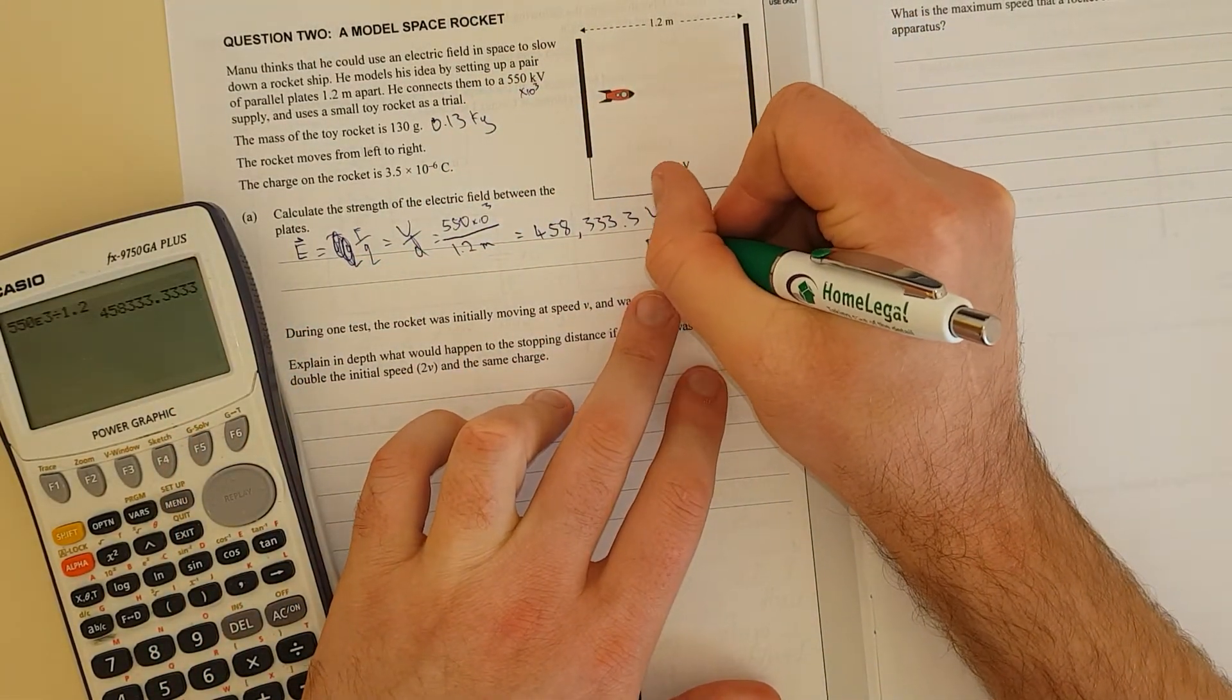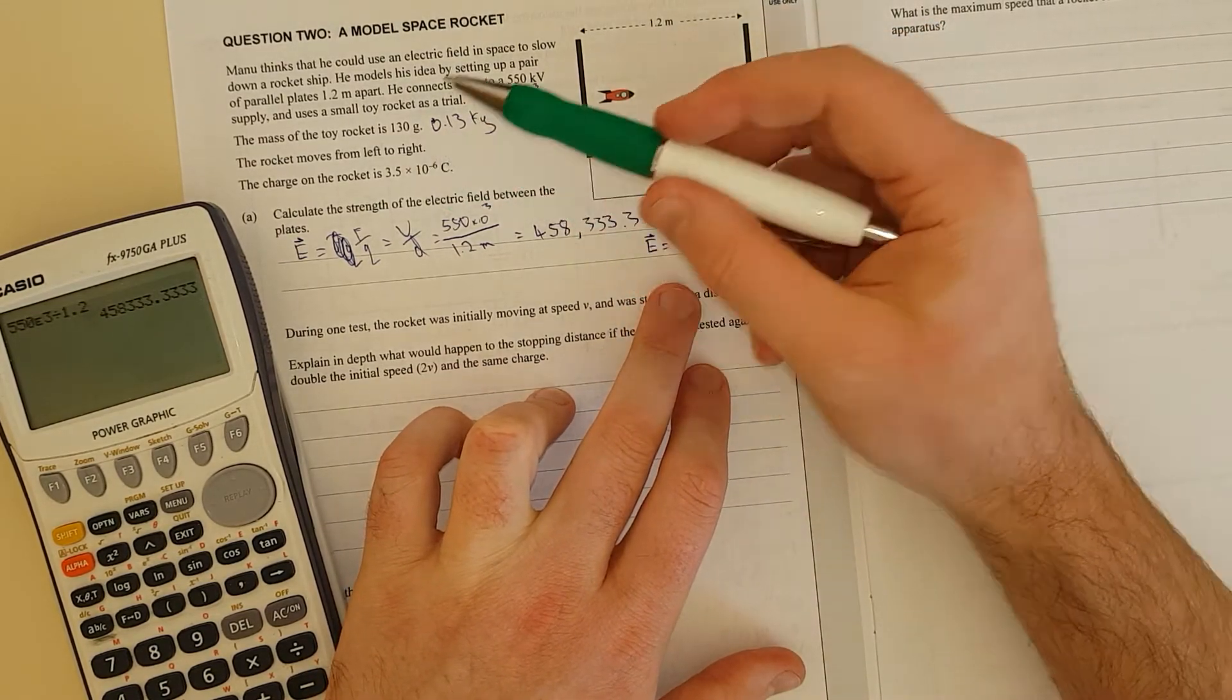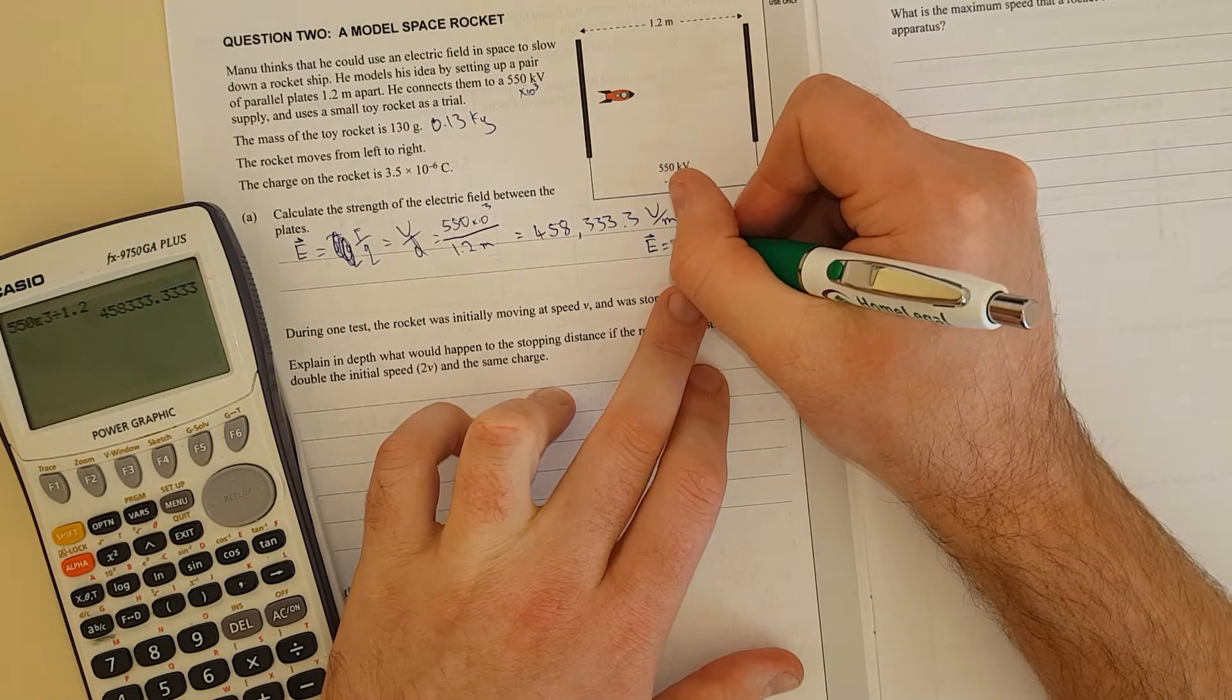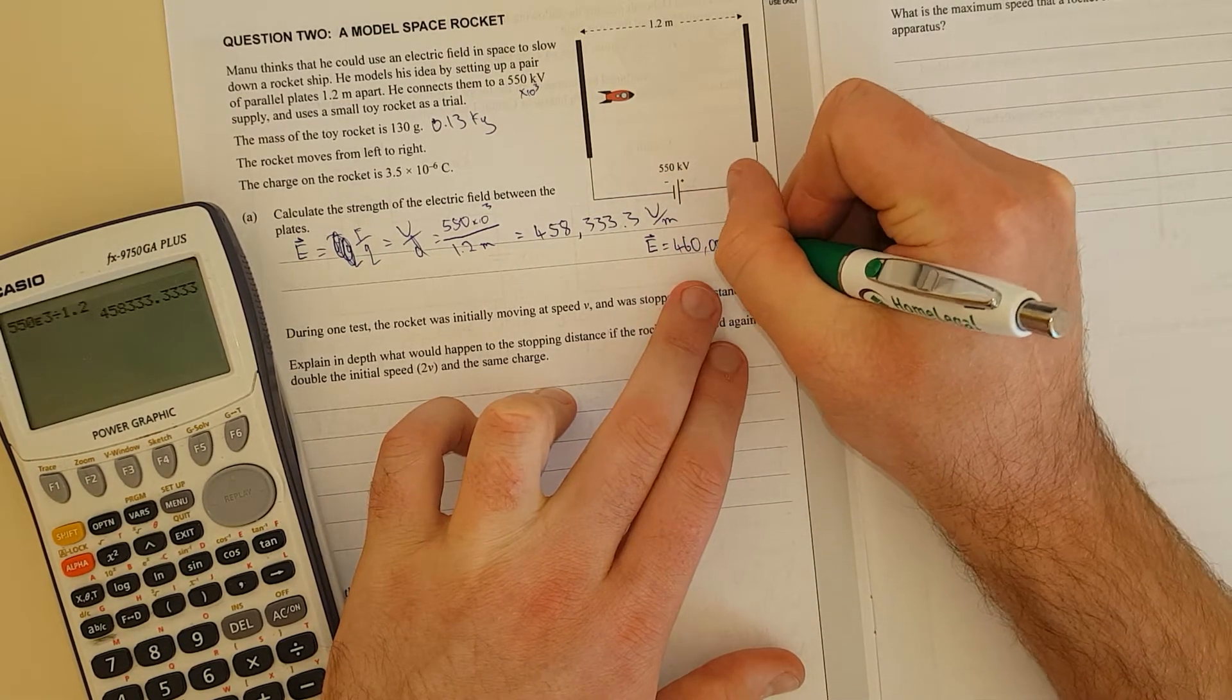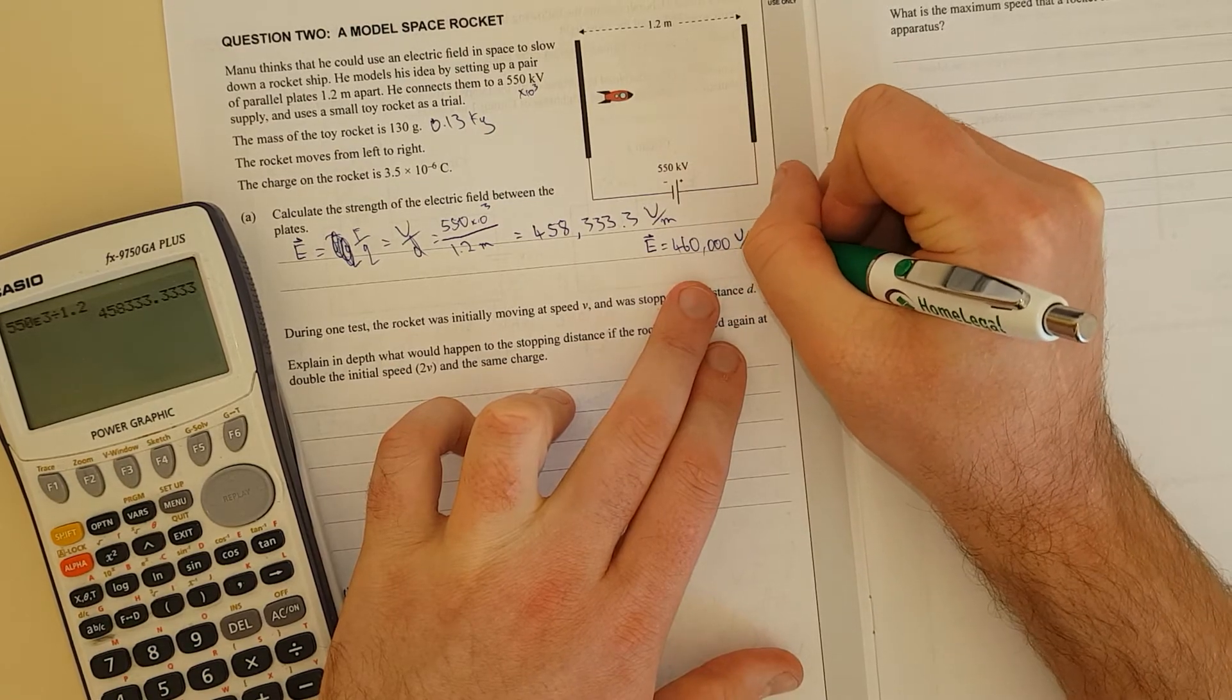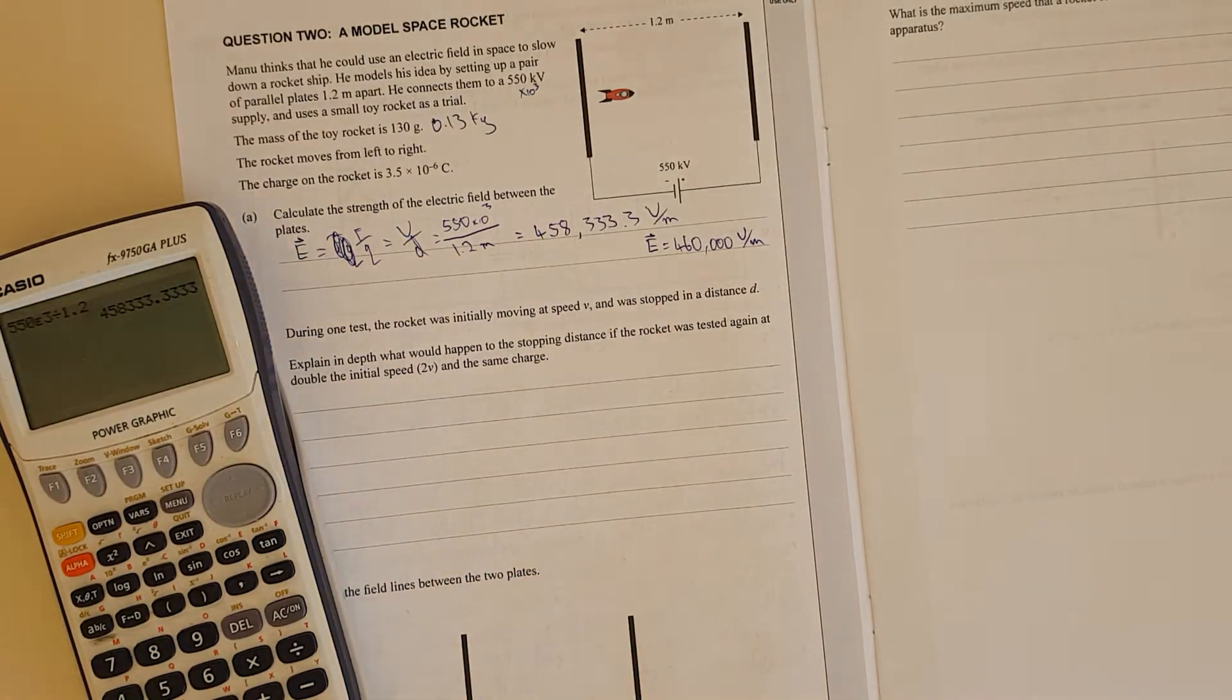So now I'm going to put a hat on top because it's a vector equals, I'll round this to 2 significant figures because everything else is 2. 460,000 volts per meter. You could write 4.6 times 10 to the 5, whatever.